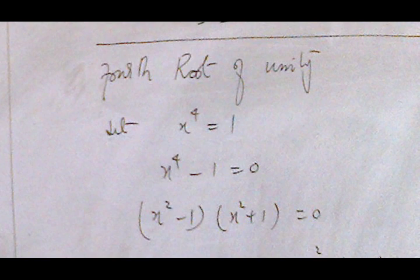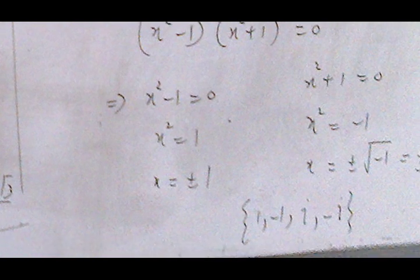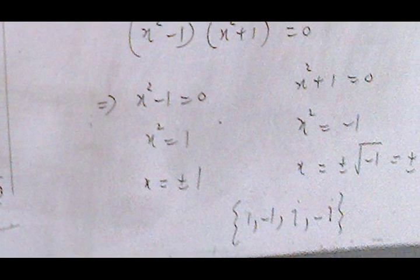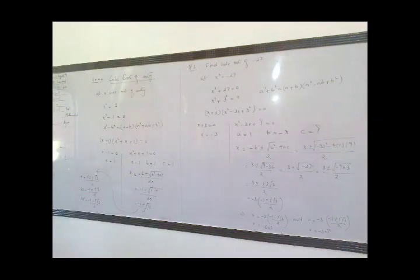For the fourth root of unity, x⁴ = 1. We move 1 to the left-hand side and apply the difference of squares formula: (x² - 1)(x² + 1) = 0. One factor gives x = ±1 and the other gives x = ±i. Therefore the four fourth roots of unity are 1, -1, i, and -i — two real roots (1 and -1) and two imaginary roots (i and -i).